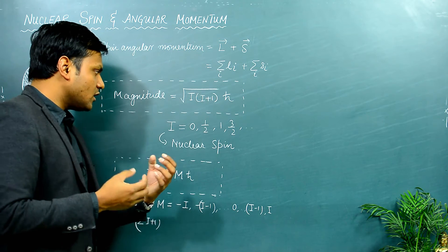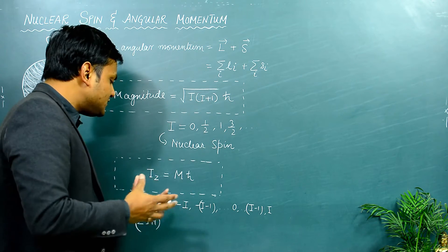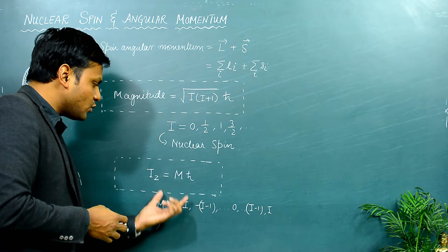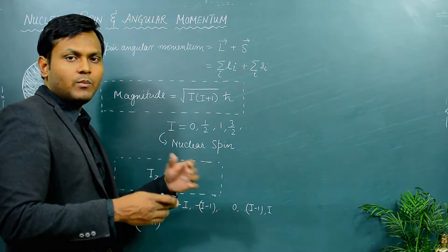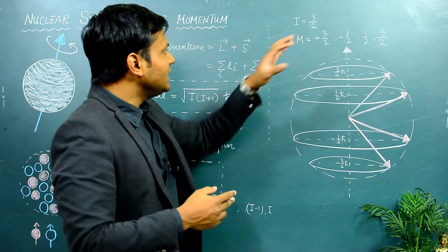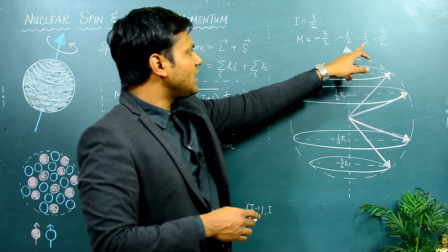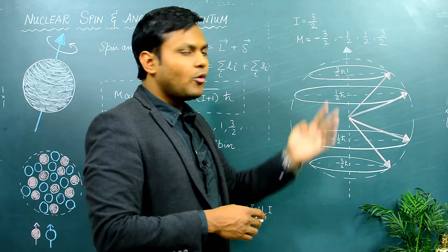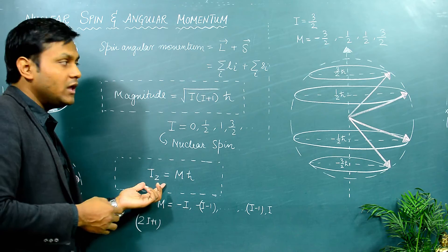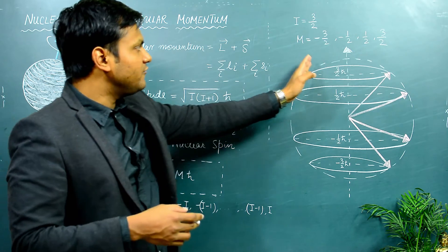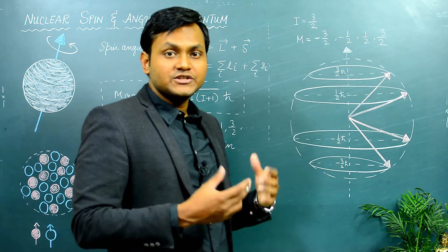Before discussing the circumstances in which the nuclear spin can have values of zero, one-half, one, and three-halves, let's look at the space quantization of a given nucleus. Take the example of I = 3/2. For I = 3/2, m can take the values −3/2, −1/2, +1/2, and +3/2. So there are four possible values of m, and the z-component of the angular momentum along a z-axis can have four different values: −3/2 ℏ, −1/2 ℏ, +1/2 ℏ, and +3/2 ℏ.